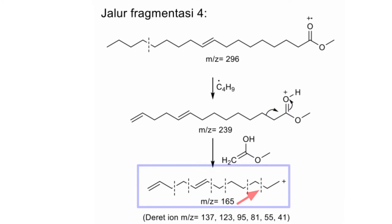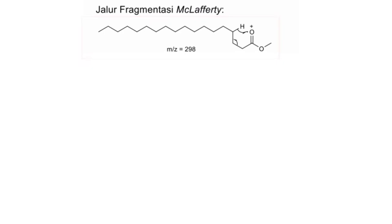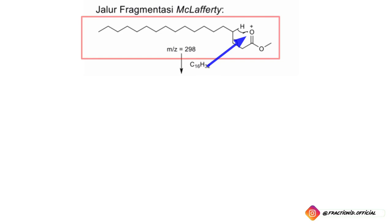Berikut ini adalah gambar 5 spektrum MS metil ester stearat. Untuk pola fragmentasi senyawa ini, karena sama-sama metil ester, jadi pola fragmentasinya sama. Ada pola fragmentasi McLafferty — ion molekulnya itu 298 m/z — kehilangan C₁₆H₃₂, di mana hidrogennya diberikan ke oksigen lalu pemutusan CC di sini, sehingga senyawa enolnya terbaca di spektrum masa sebesar 74 m/z, lalu kehilangan O-methyl sehingga terbaca di spektrum masa sebesar 43 m/z. Jadi akan saya jelaskan lebih cepat dari sebelumnya.